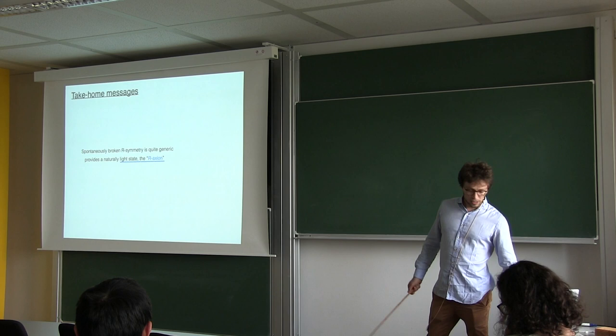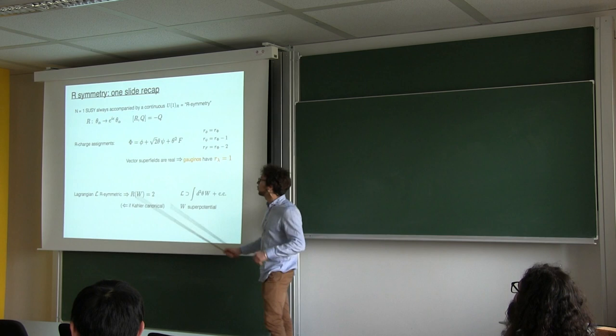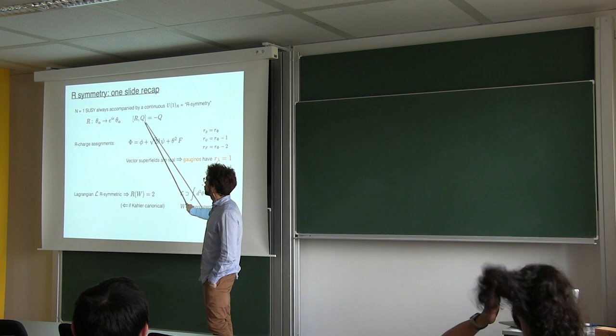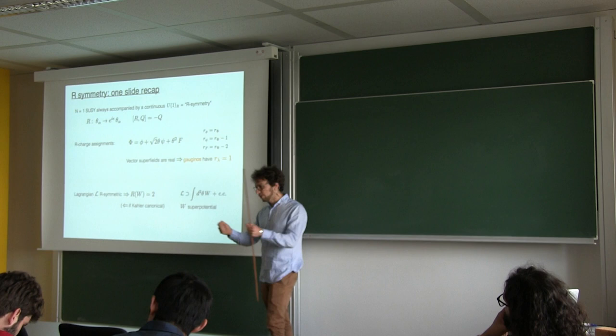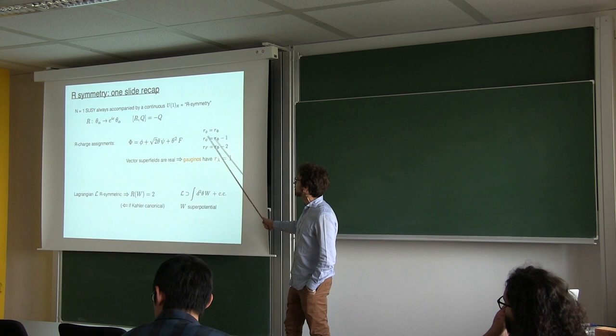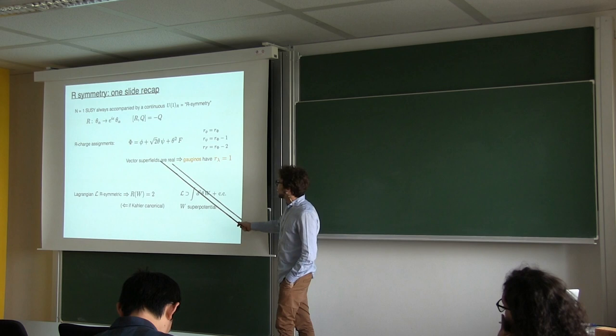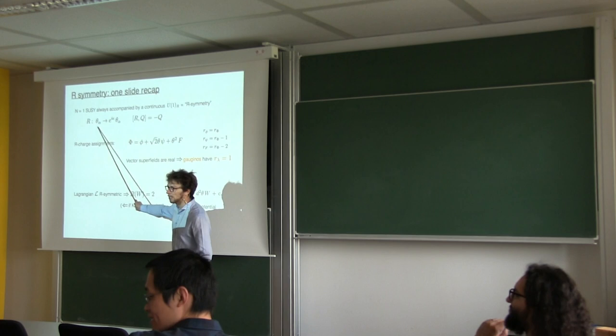Let me start about motivating their action. First, one slide recap about R-symmetries. N=1 supersymmetry is accompanied by one continuous U(1)_R that is defined by the fact that it doesn't commute with the SUSY generators, and it's called R-symmetry. The fact that it doesn't commute with the supersymmetry transformation generators means that the charge assignments of fields that live in the same supermultiplet are different. For example, in a chiral superfield, if the scalar, for example the stop, has a certain charge, then the fermion, for example the top, has the same charge minus 1. Since vector superfields are real, this implies that gauginos have always R-charge 1.